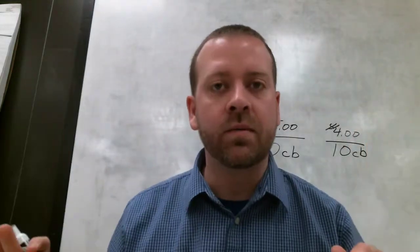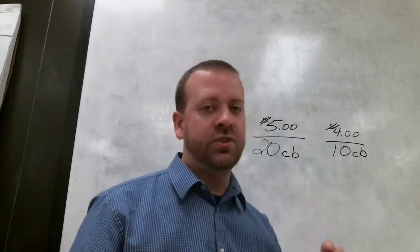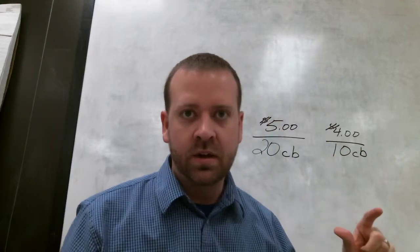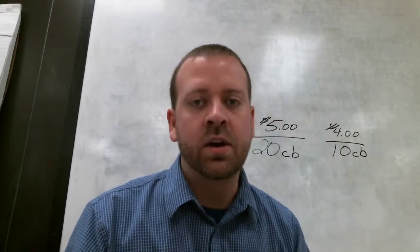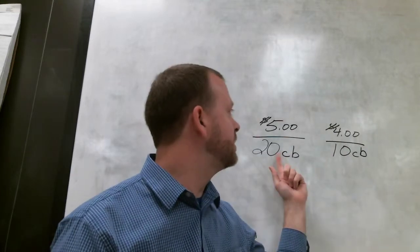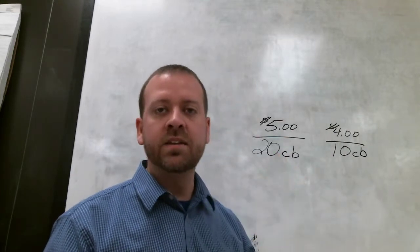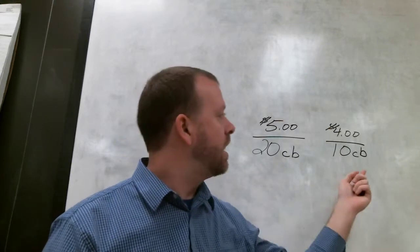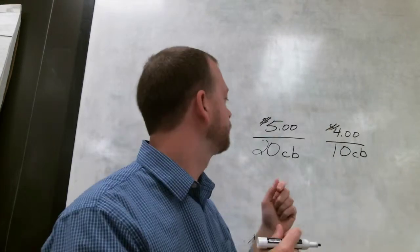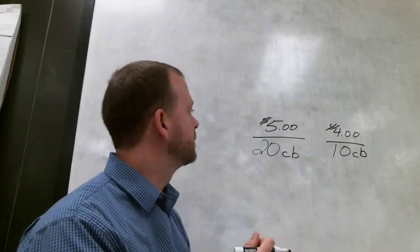Now, without even knowing about unit rate, you might think, oh well, $4 is cheaper than $5. I got to go with this one, right? But you're not getting the same amounts. You've got to compare them in the same terms. So what you have to do is you have to figure out, okay, how much is each candy bar if I buy this box? And how much is each candy bar if I buy this one? And it's very easy to do.